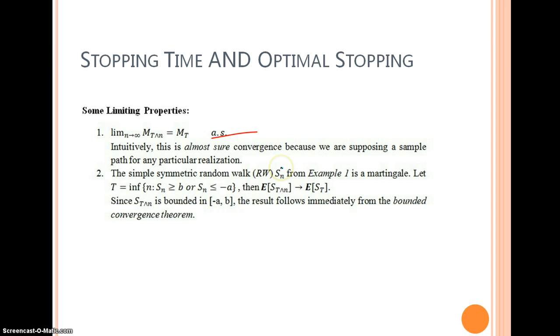For the second one, we consider a simple symmetric random walk, the same one as we do in example 1. So it is a martingale and we define the hitting time in the same way and then we have this convergence property. The proof of this convergence is rather simple because S_t wedge n is bounded and the result will follow immediately from the bounded convergence theorem.